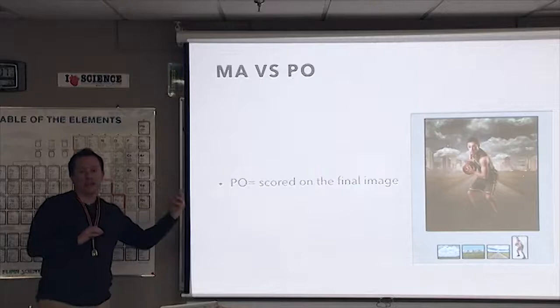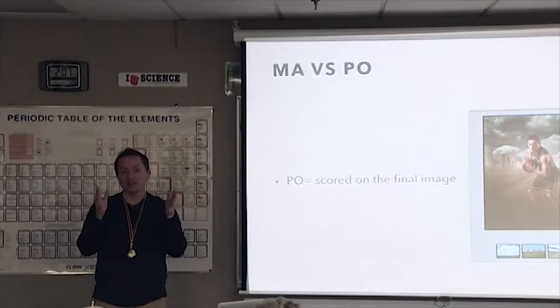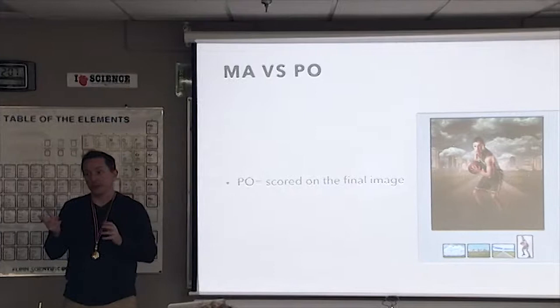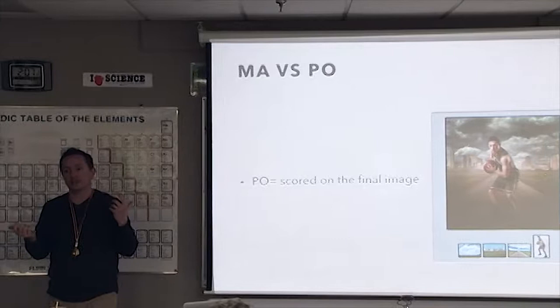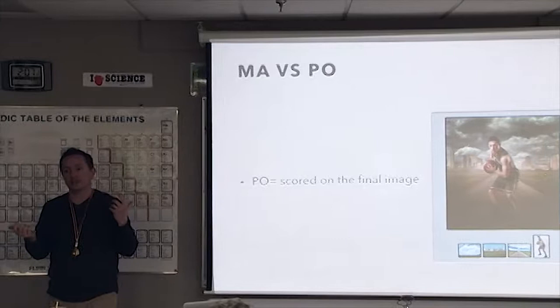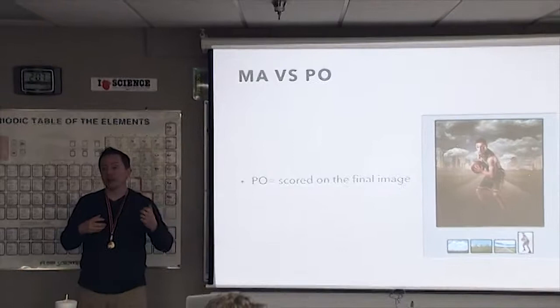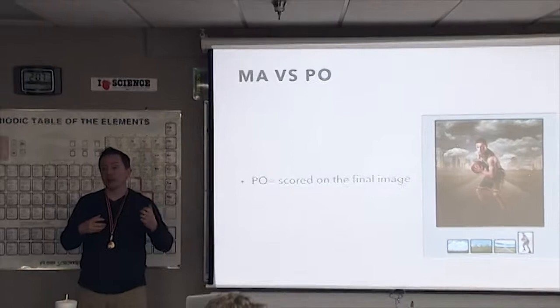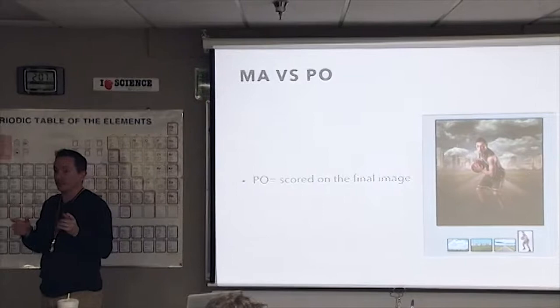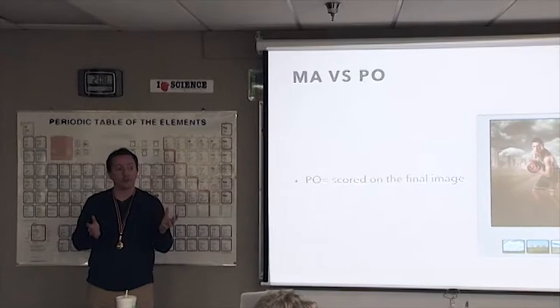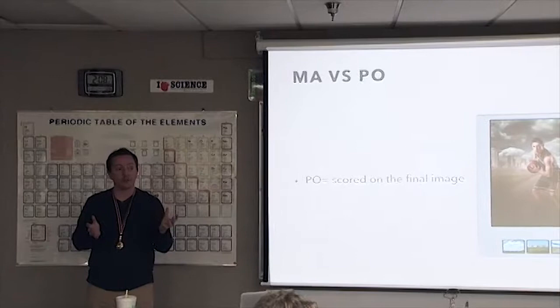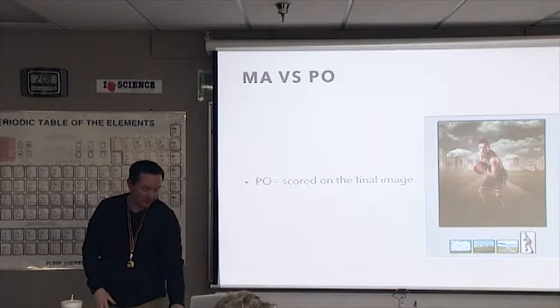In PO, an image is scored on the final result — what you came up with. All I care about as a judge is the final image. Is it a beautiful image? The degree of difficulty is not considered. People always want to tell you how hard the shot was — I had to lean over a cliff, it took seven days 24/7 in Photoshop. That's all your problem. As an approved judge for six or seven years, including nationals for the last four years, all that matters is the final image.